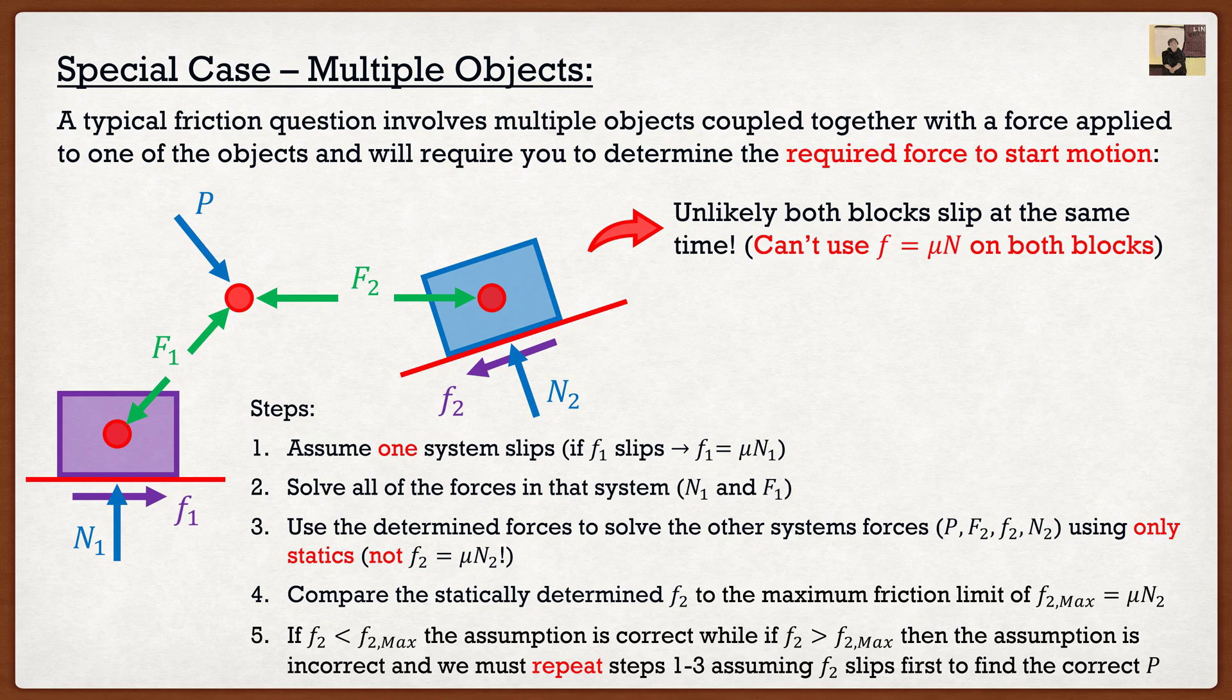But let's say that we solve for F2 using statics and it was 30 kilonewtons. And F2 max was still 20. Well, we know that in this particular case the box has already slipped. So in this case, our assumption was wrong.